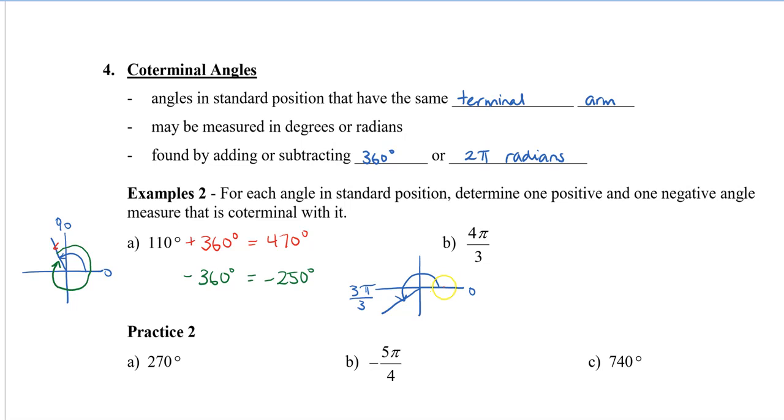So similarly, to get a coterminal angle, I need to start here, go all the way around, and then back. So I'm reaching 4π over 3, and then I have to add another 2π this time to go all around. So adding 2π is actually the same as adding 6π over 3. And so this gives us 10π over 3, and this will be in radians.